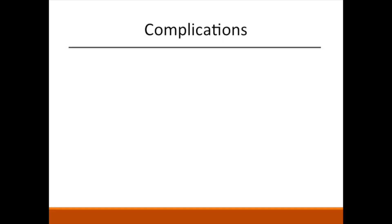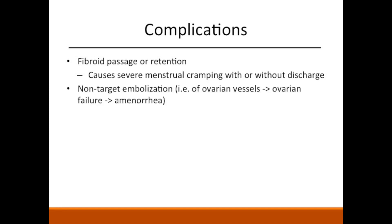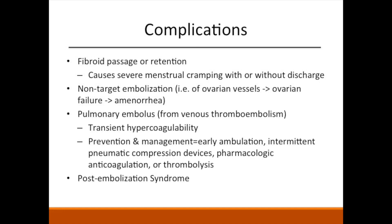Several potential complications from UFE include fibroid passage or retention, which could result in substantial labor-like pain, vaginal discharge, bleeding, and infection. Another adverse outcome, though infrequent, is ovarian failure with amenorrhea as the result of non-target embolization of the ovarian vessels. Lastly, a temporary elevation of procoagulant factors can contribute to pulmonary embolus. Depending on the risk factors, prevention and management ranges from early ambulation and pharmacologic anticoagulation to thrombolysis.